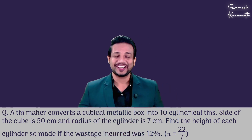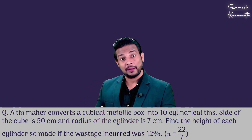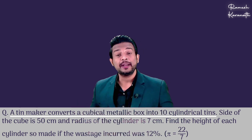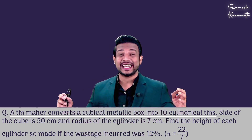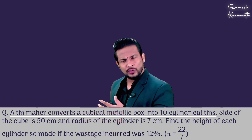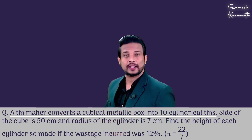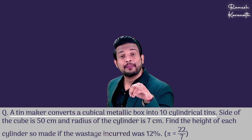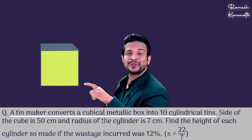Okay, let's see. First of all, let's understand what is given in the sum. We will learn part by part. A tin maker converts a cubical metallic box into 10 cylindrical tins. This tin maker makes tins. They have a cubical metallic box — it means the metallic box is a cube shape.